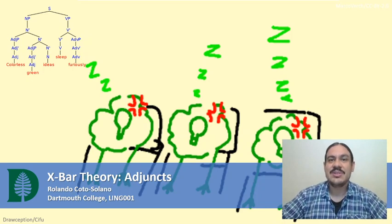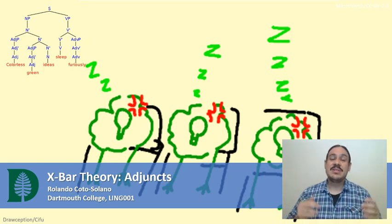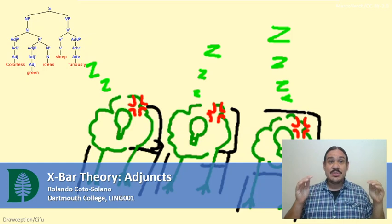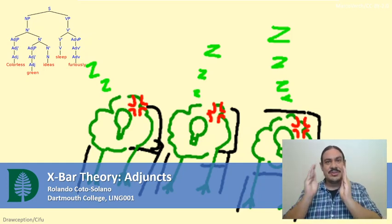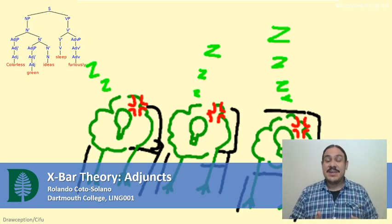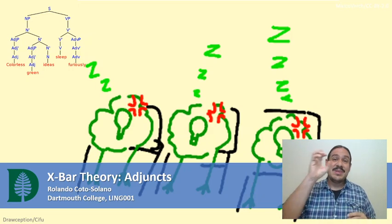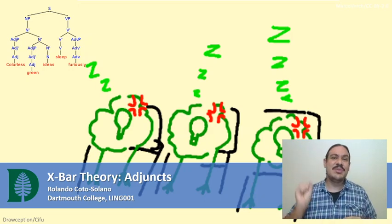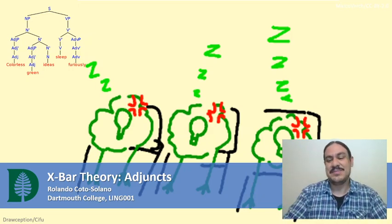In our last video, we started our study of X-bar theory, which is a theory that we can use to look at the hierarchical structure of sentences. In this video, we will add one more element to the theory: adjuncts.